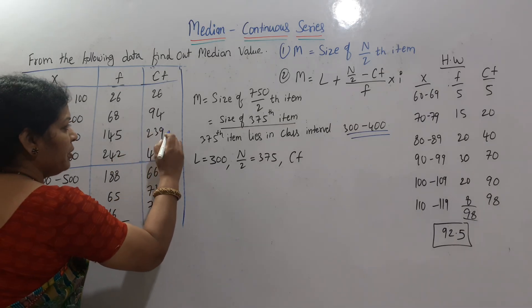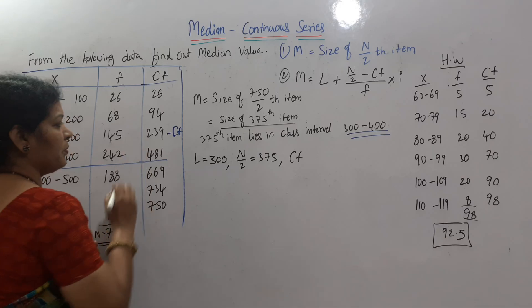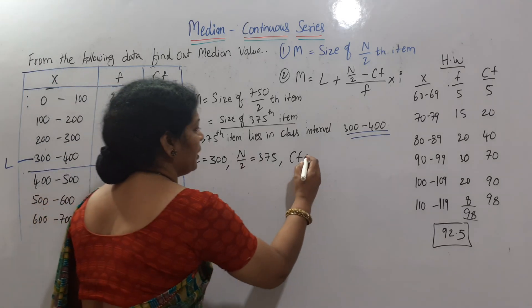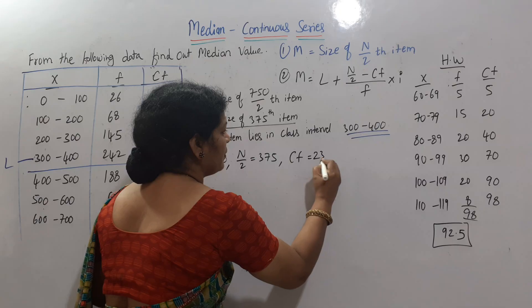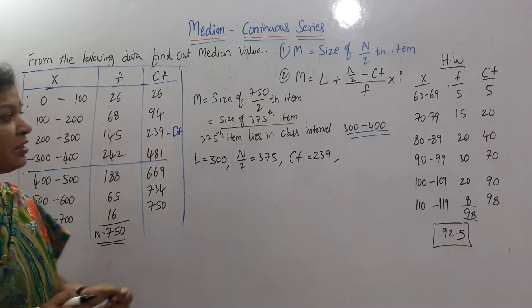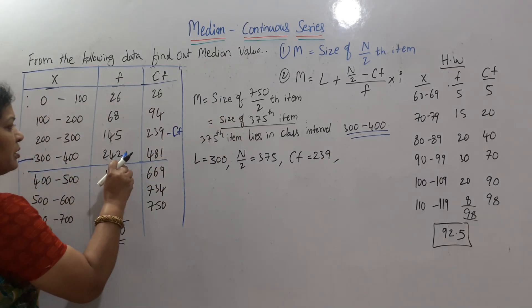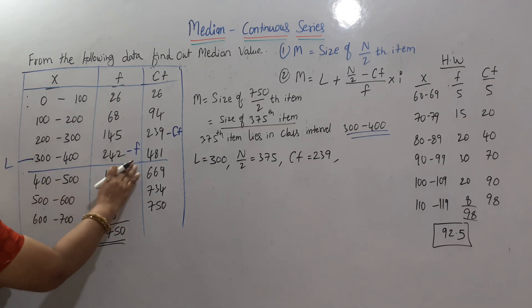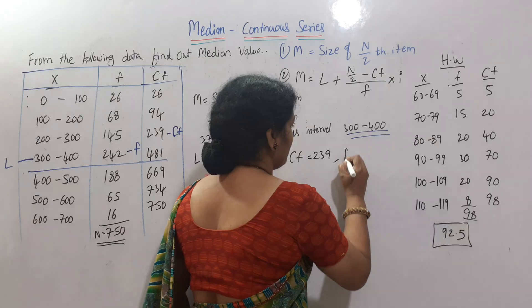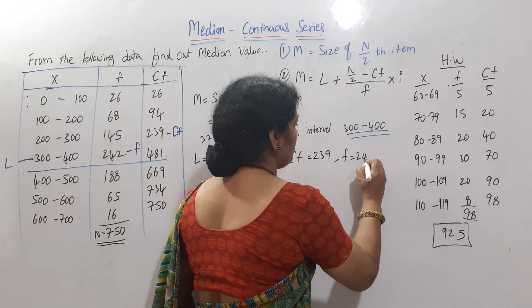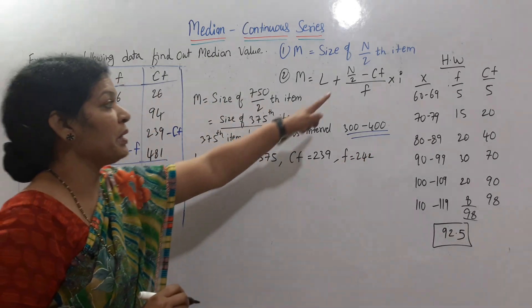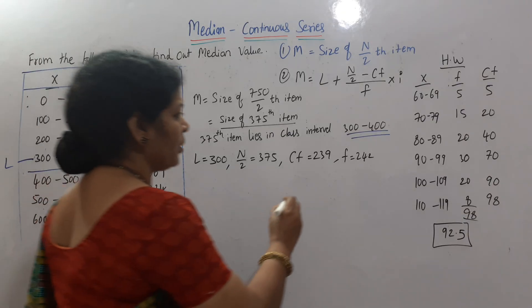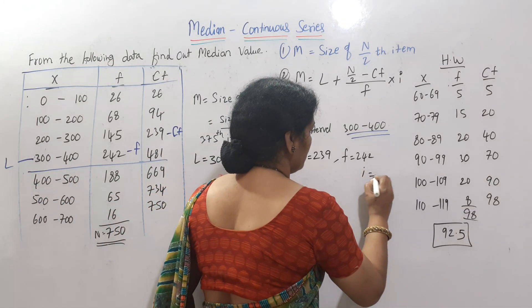CF is 239 — the cumulative frequency of the class preceding the median class. Then we have frequency, which is 242 — the frequency of the median class line. I means class interval width. The difference between class boundaries is 100, so I is equal to 100.